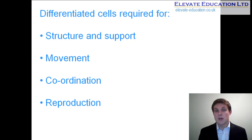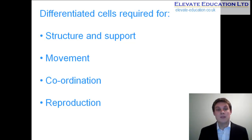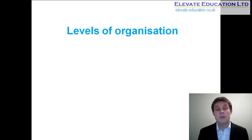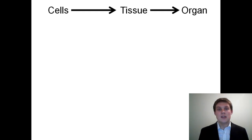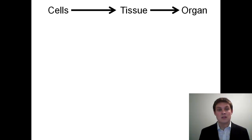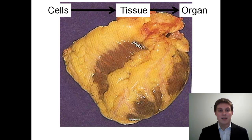There are five levels of cellular organization we need to know about within organisms. At the basic level is the cell, the building block of life. Cells of the same type are grouped together into a tissue. In turn, different types of tissue work together to form organs. If we consider the heart, there are a number of different types of cells and tissue that go into making it up.